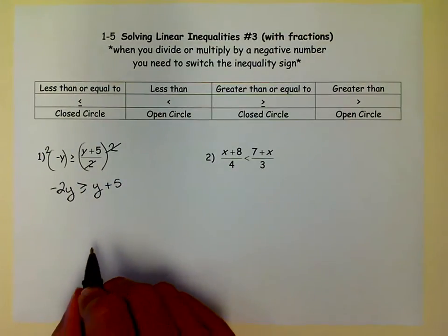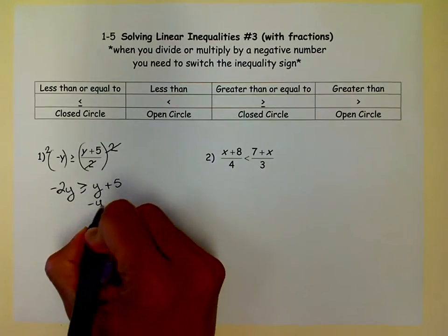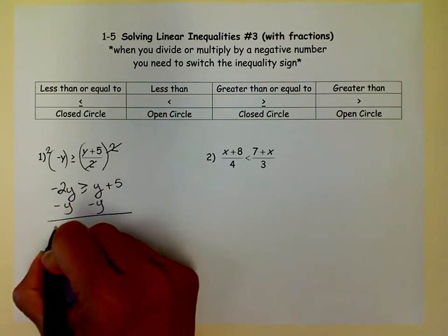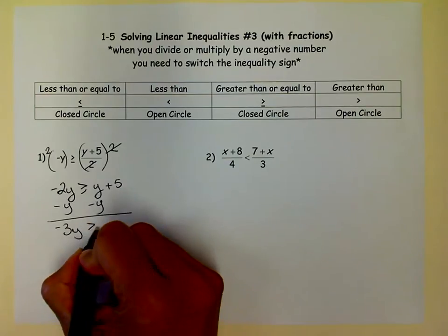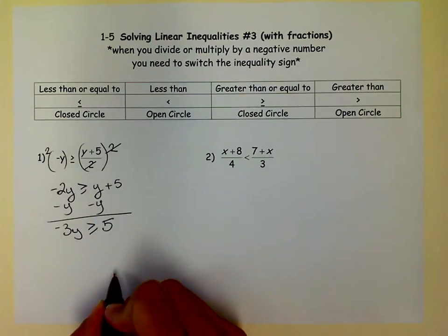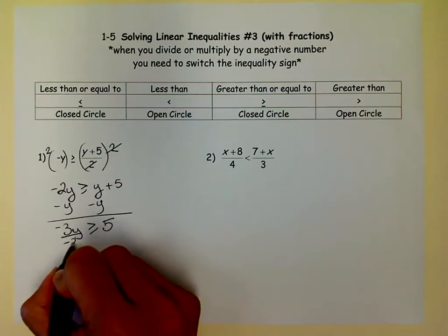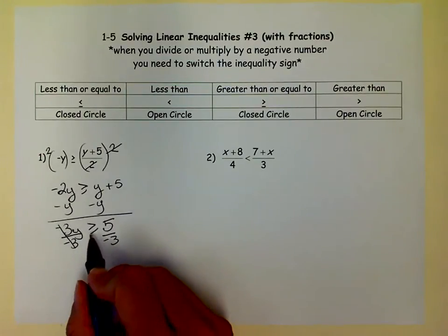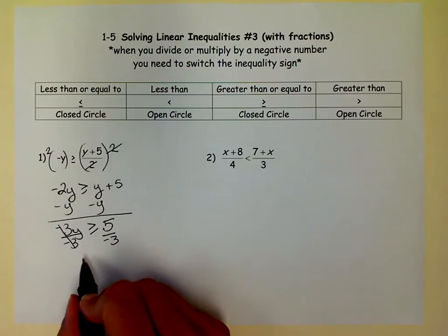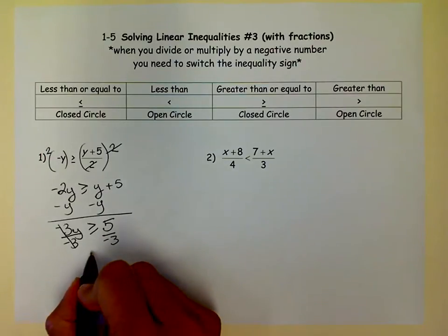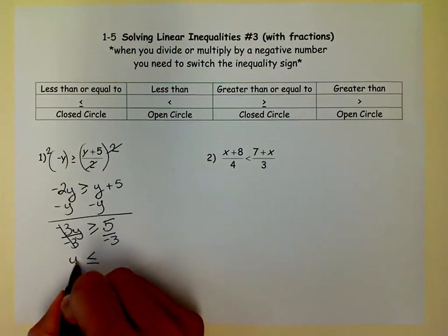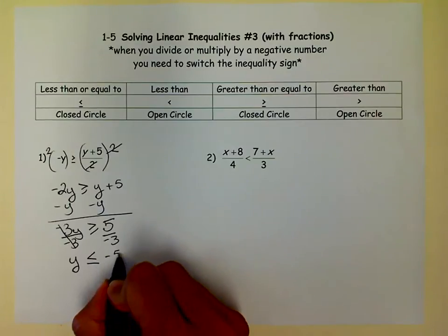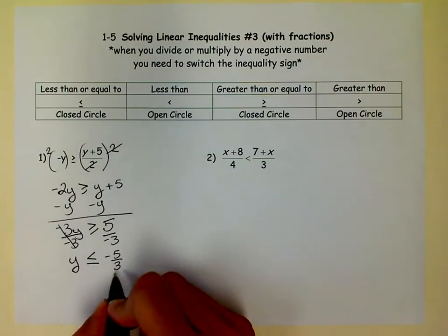And now I need to get Y alone on one side. So I'm going to move this Y over and I get negative 3Y is greater than or equal to 5. And then I'm going to divide both sides by a negative 3 and a little bell should be going off. Oh, I'm dividing an inequality by a negative. That means I have to switch the inequality sign. So don't forget that little trick every time you divide by a negative. So our answer is Y is less than or equal to negative 5 thirds.